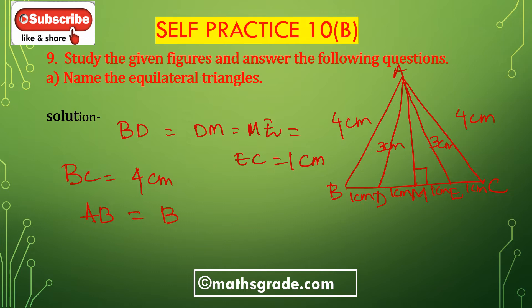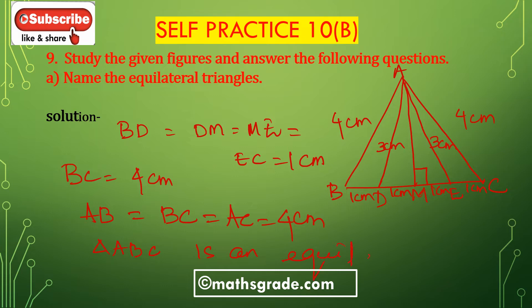AB equals BC equals AC equals 4cm. So this is an equilateral triangle. Triangle ABC is an equilateral triangle. All three sides are equal — 4cm, 4cm, and BC also 4cm. So triangle ABC is an equilateral triangle.